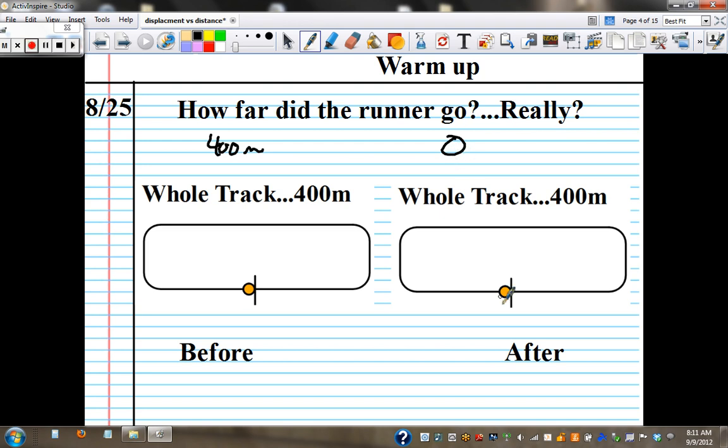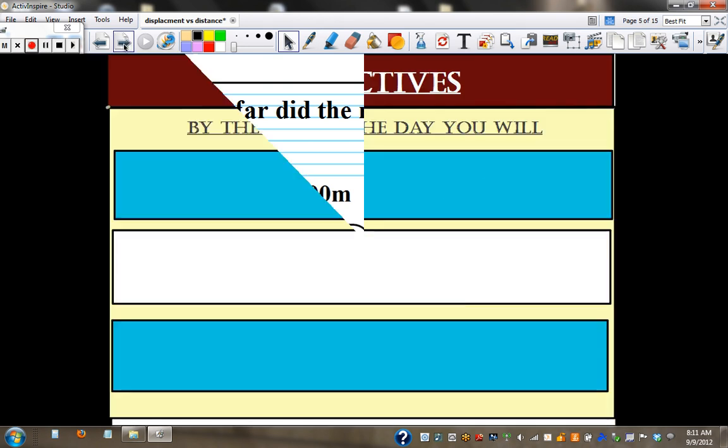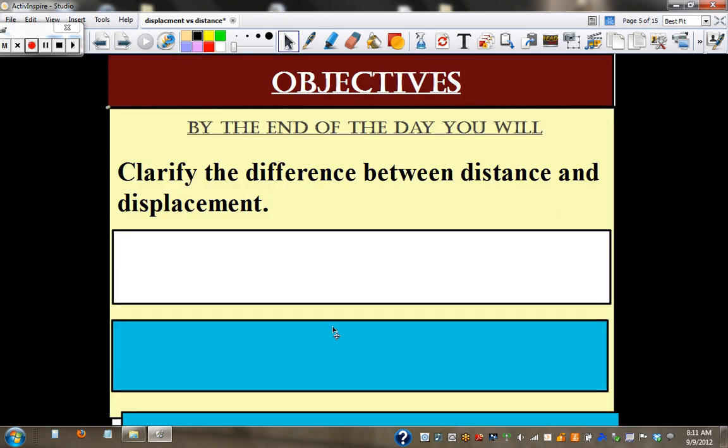the runner didn't go anywhere because they started where they finished, and they're both right because this marks the difference between the two main ideas. In this lesson we're going to clarify the difference between distance and displacement